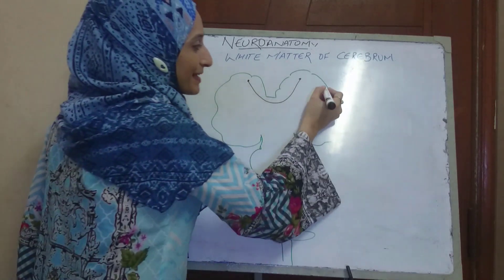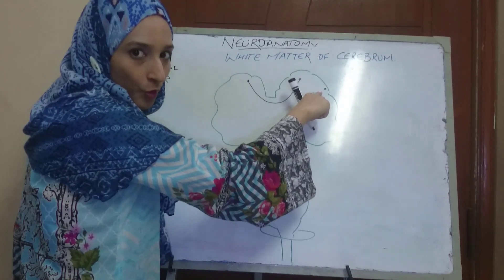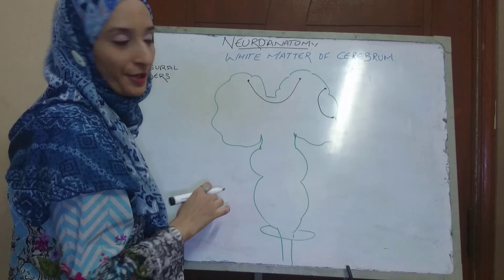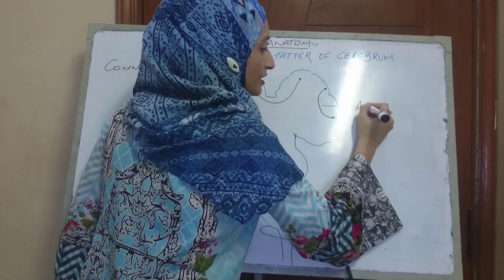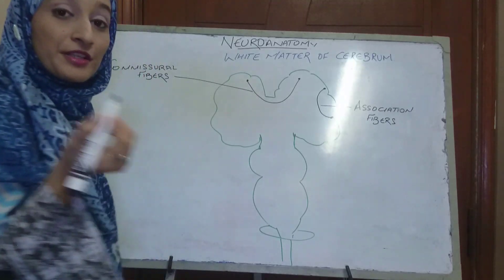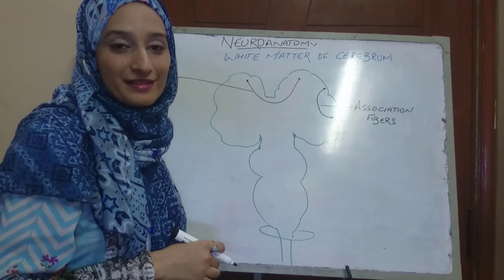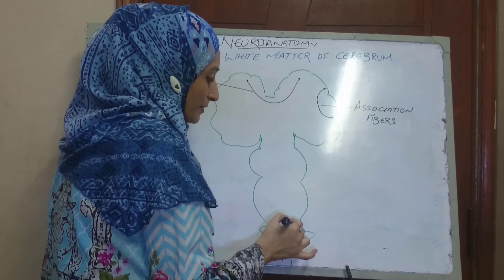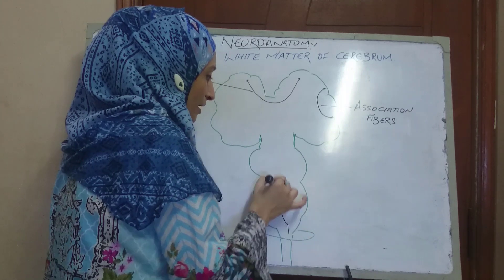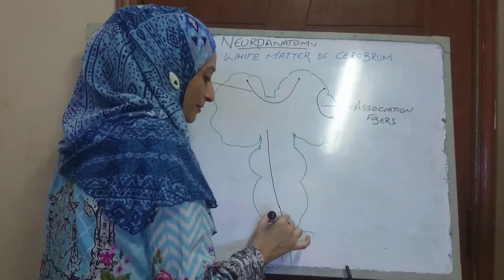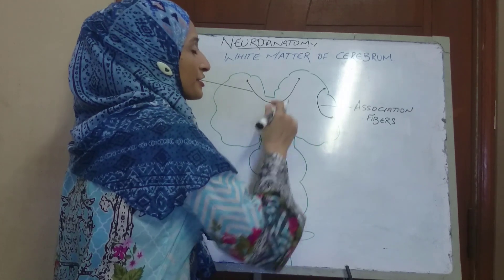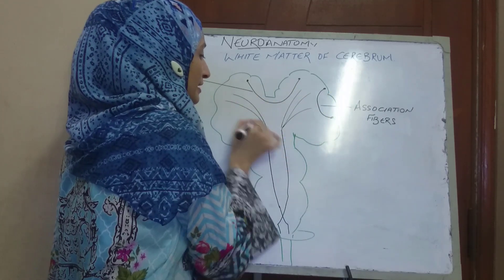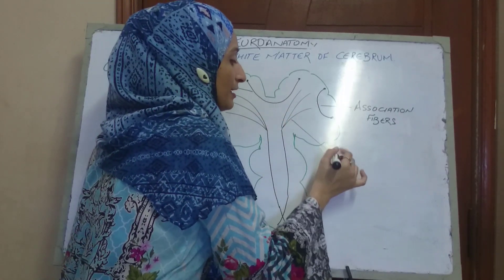Then we have another fiber which connects one region with another region within the same hemisphere — such nerve fibers are known as association fibers. There is also a third type of fibers running through the central nervous system. They come from the lower part of the CNS all the way up, and as they reach the cortical area, they project out. Such fibers are known as projection fibers.